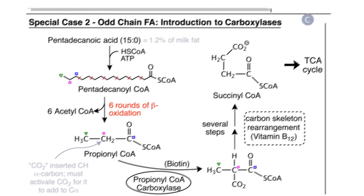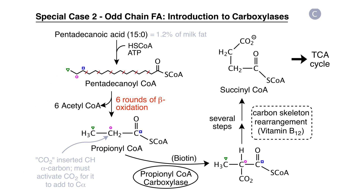Let's turn now to panel C of storyboard 19. The second special case concerns the way that we metabolize fatty acids that have an odd number of carbons. One example would be the C15 fatty acid, pentadecanoic acid, which we get from milk fat. In this case, six rounds of beta-oxidation will release six acetyl coenzyme A's, but we're left with a three-carbon residue, a carboxylic acid called propionyl coenzyme A.